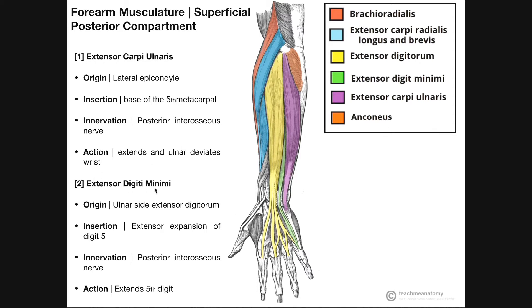The second muscle is called extensor digiti minimi — the green muscle sandwiched between extensor carpi ulnaris in purple and extensor digitorum. The origin of extensor digiti minimi is actually on the ulnar side of extensor digitorum. Some consider it just an extension of extensor digitorum, since its origin is actually just the proximal part of that muscle. After it becomes its own separate muscle, the fibers extend distally and insert on the extensor expansion of digit five.